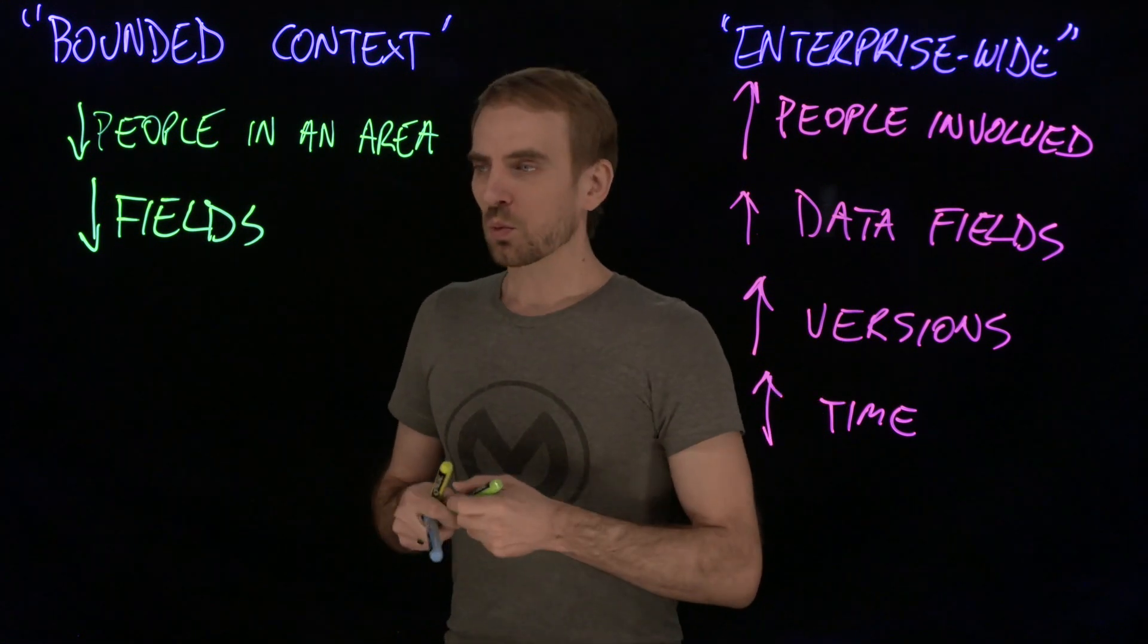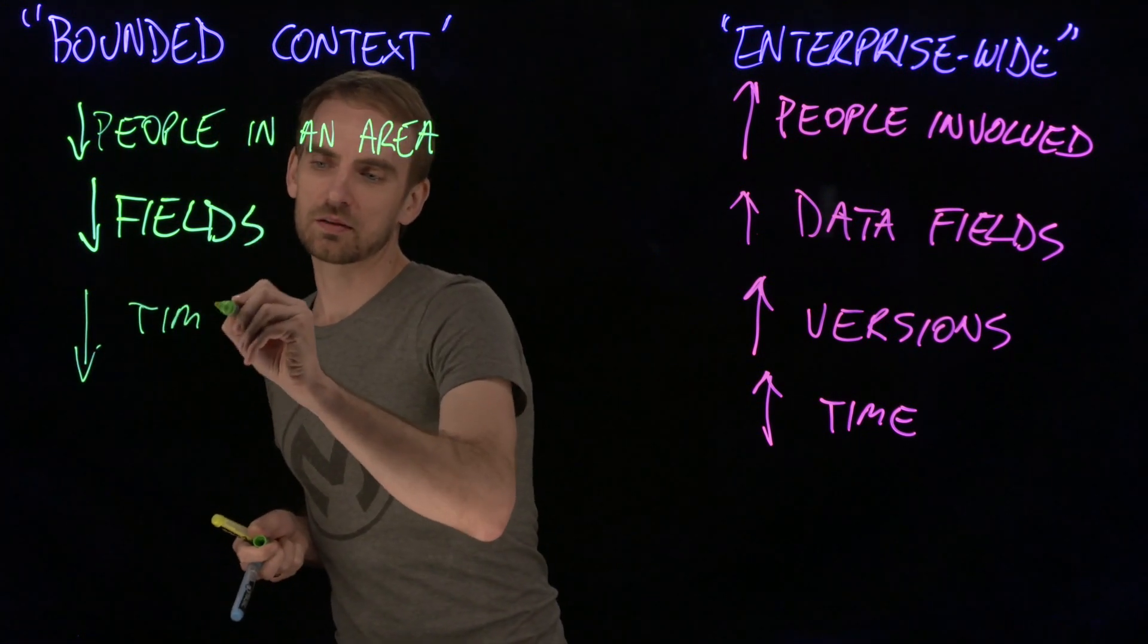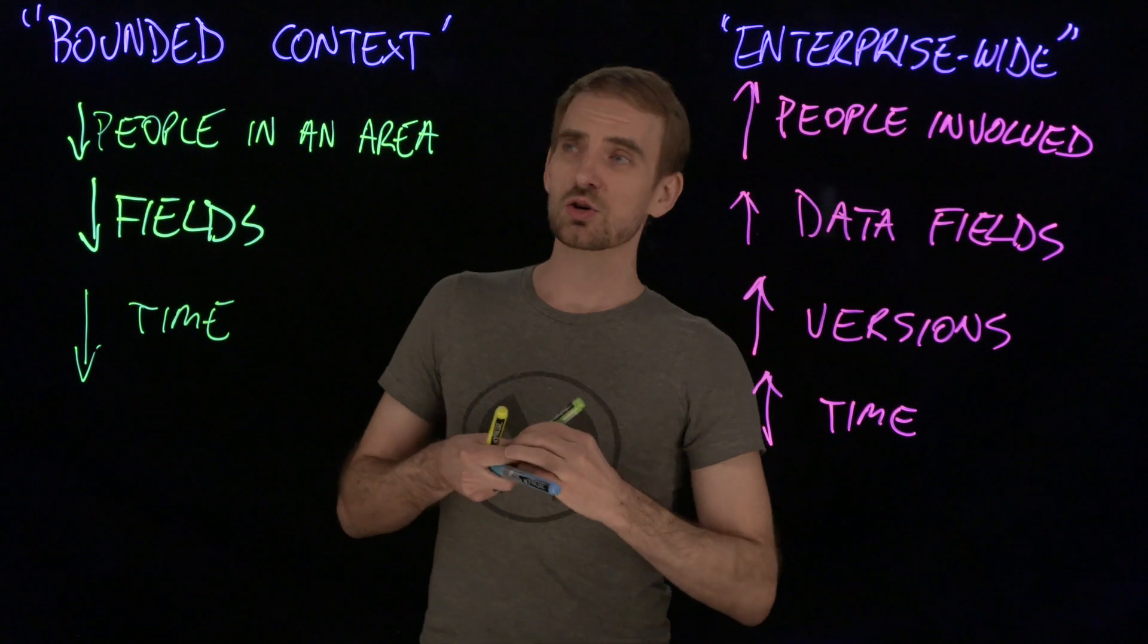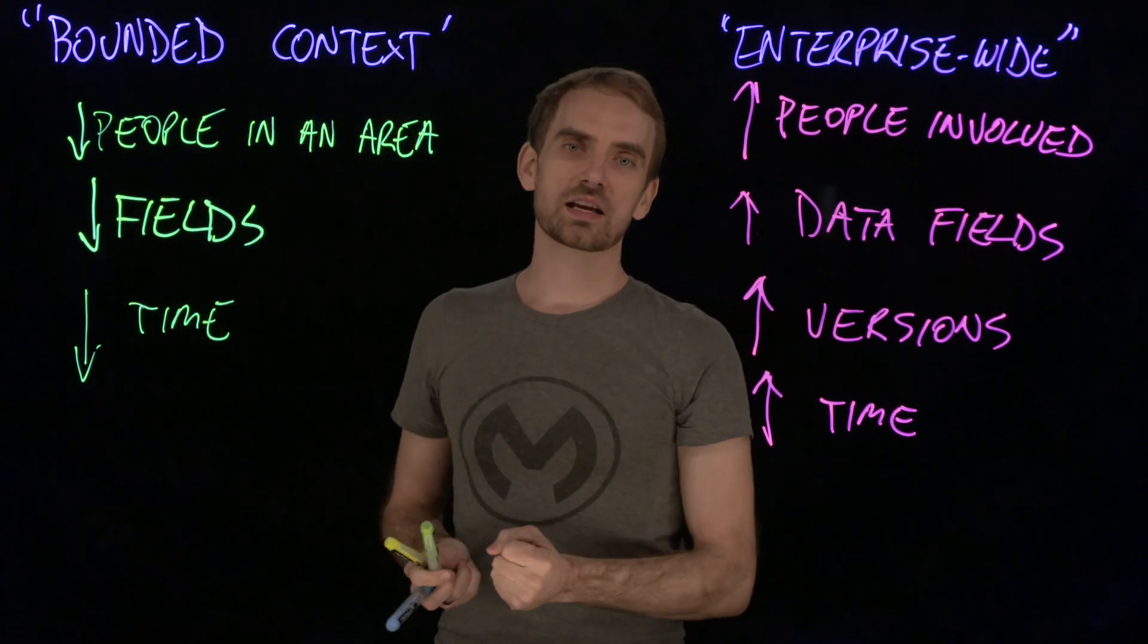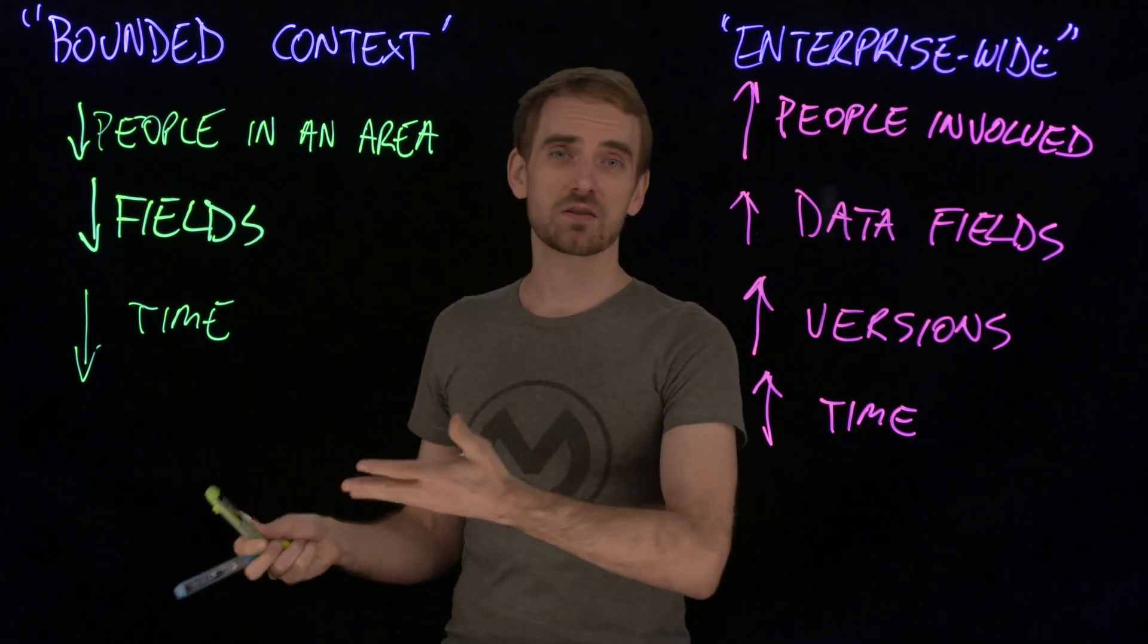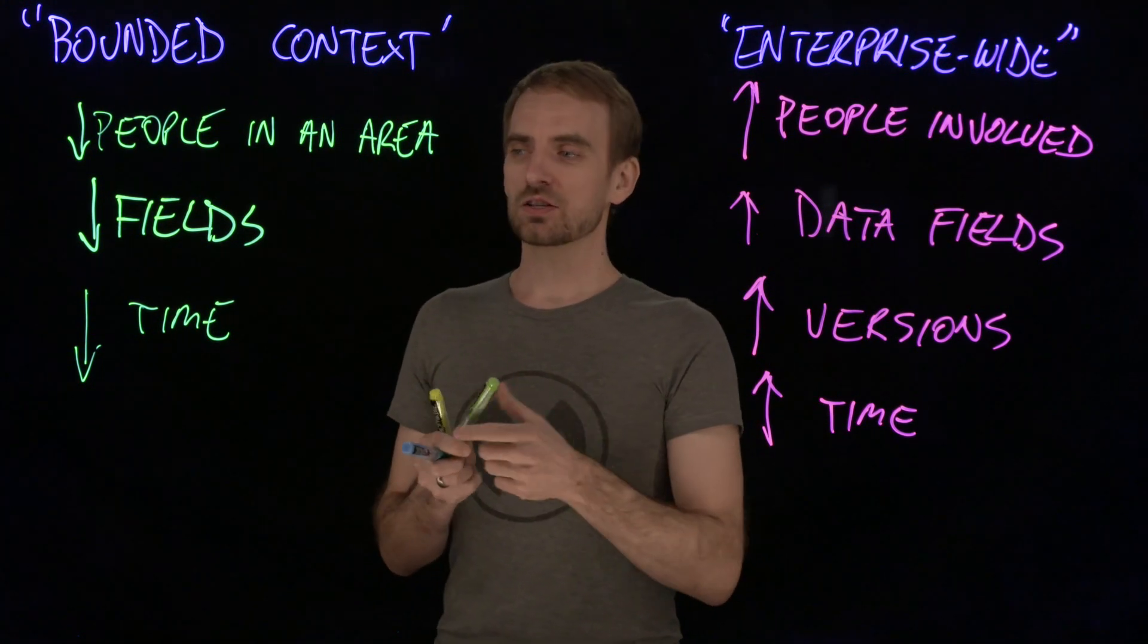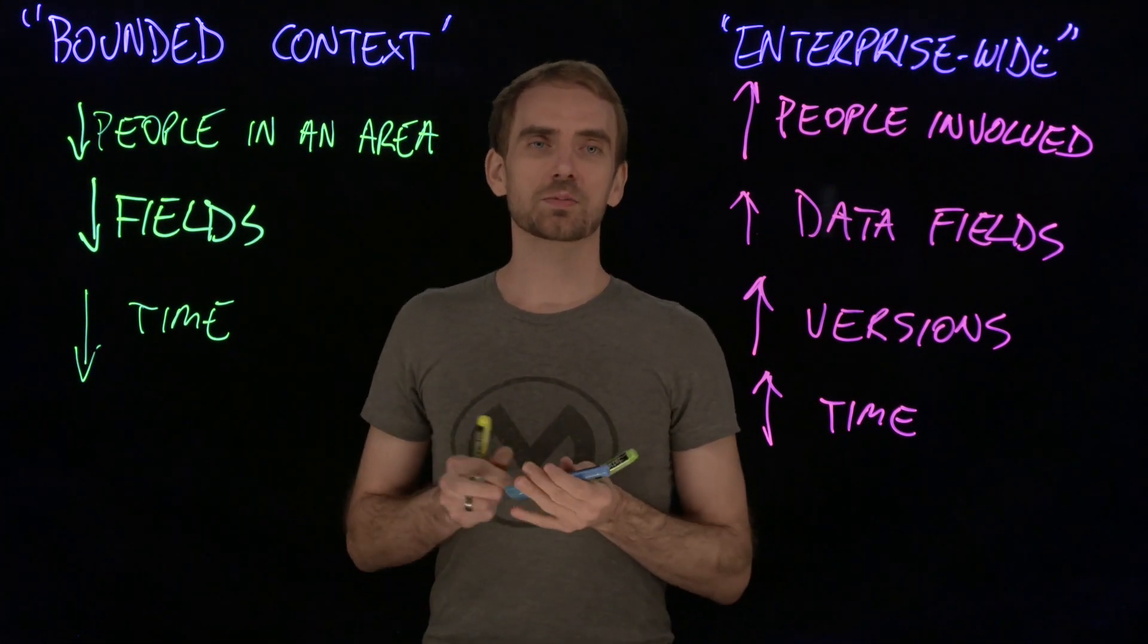And overall time, well again, the amount of time that you need to spend, it's a divide and conquer type equation now, because you can have this bounded context, you can have the accounts section doing theirs, you can have marketing, you can have services doing theirs. So everyone can be working in parallel. So it does change the equation quite considerably.